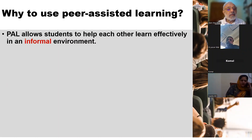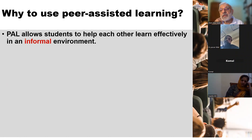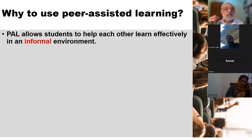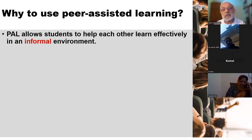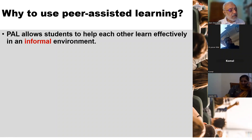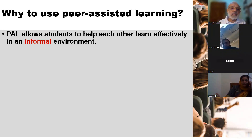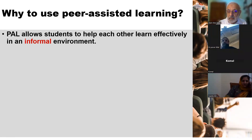Peer-assisted learning allows students to help each other learn effectively in an informal environment. This is a very strong point in favour of peer-assisted learning. Students can be more friendly and more open to each other compared to their teachers, and they don't need to be very formal. They understand each other's issues better and can communicate better in their own way in an informal environment.